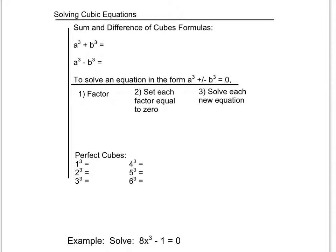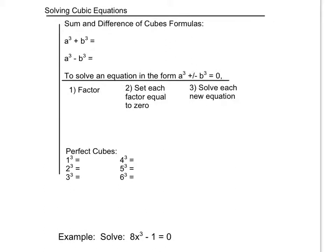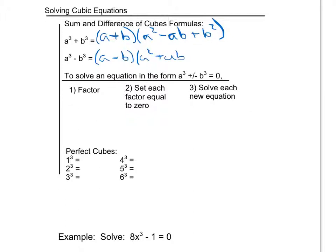The first one is a cubed plus b cubed. That is going to factor to be a plus b times a squared minus ab plus b squared. And the second one, a cubed minus b cubed, is going to factor to be a minus b times a squared plus ab plus b squared.